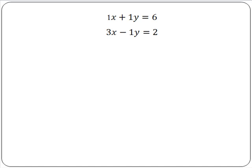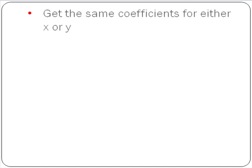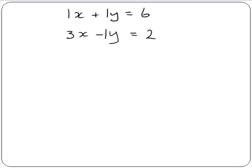The first step is to get the same coefficients for either x or y. The coefficient is the number multiplied by the variable. So in our first equation, the x coefficient is the number multiplied by x — in this case, 1. If we look at both our equations, the y coefficients are the same, because the y coefficient in both cases is 1.